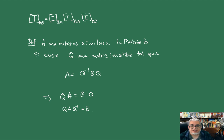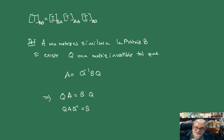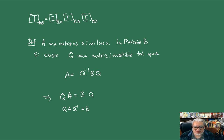De momento vamos a pararle aquí. Lo que vamos a hacer la próxima sesión es empezar a hablar sobre determinantes. Vamos a definir los determinantes usando propiedades sencillas y luego vamos a darle un sentido geométrico. Vamos a ver qué tiene que ver eso con la dimensión, con la solución de sistemas lineales, y con la posibilidad de invertir la transformación o las matrices. Pero por el momento le vamos a parar aquí y nos vemos en una siguiente sesión. ¡Chau!